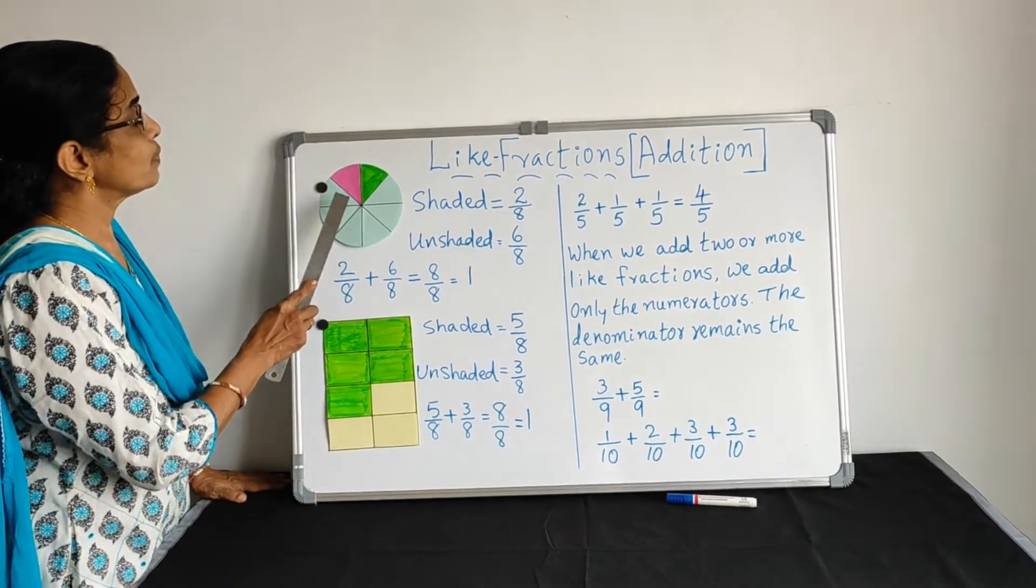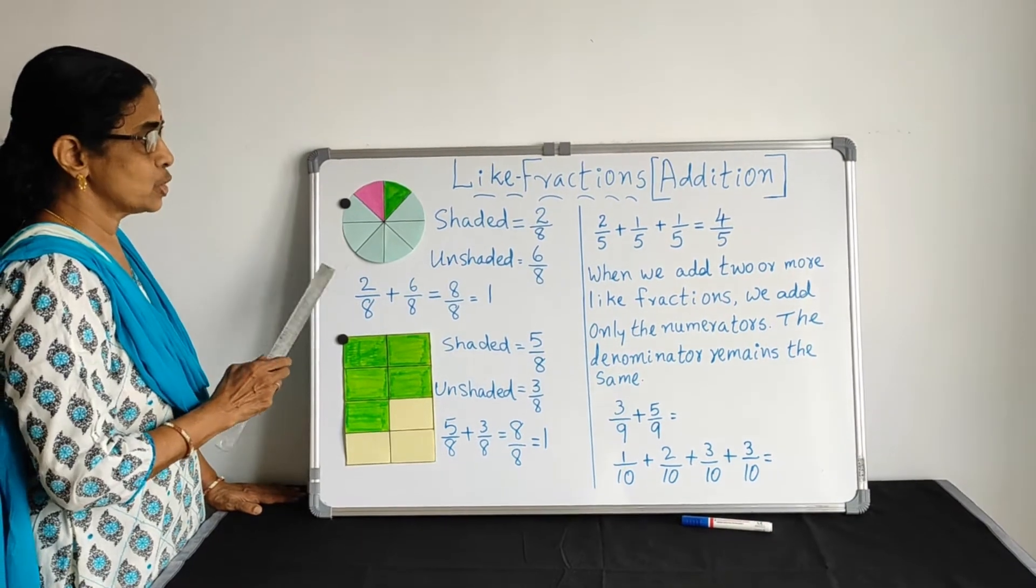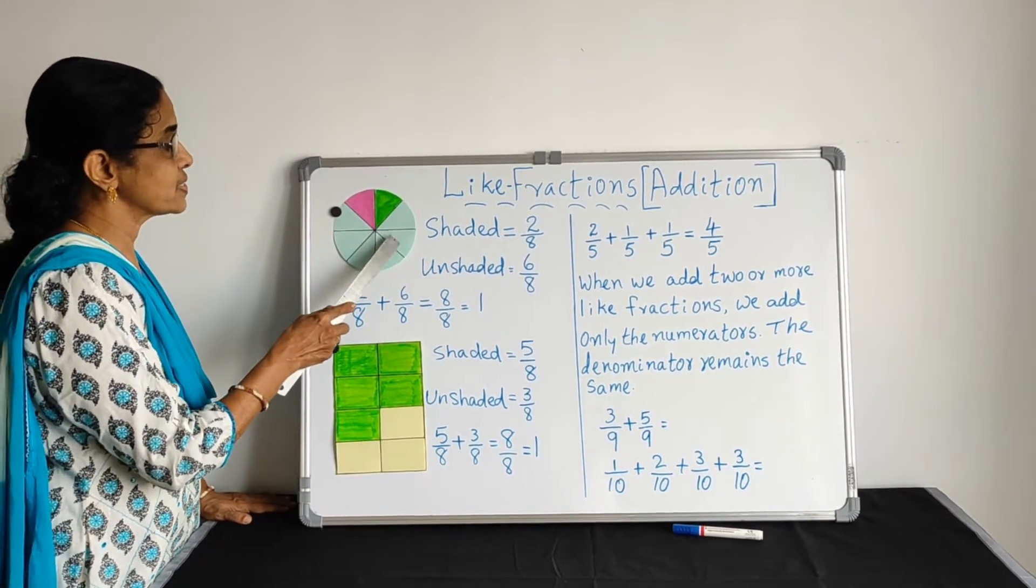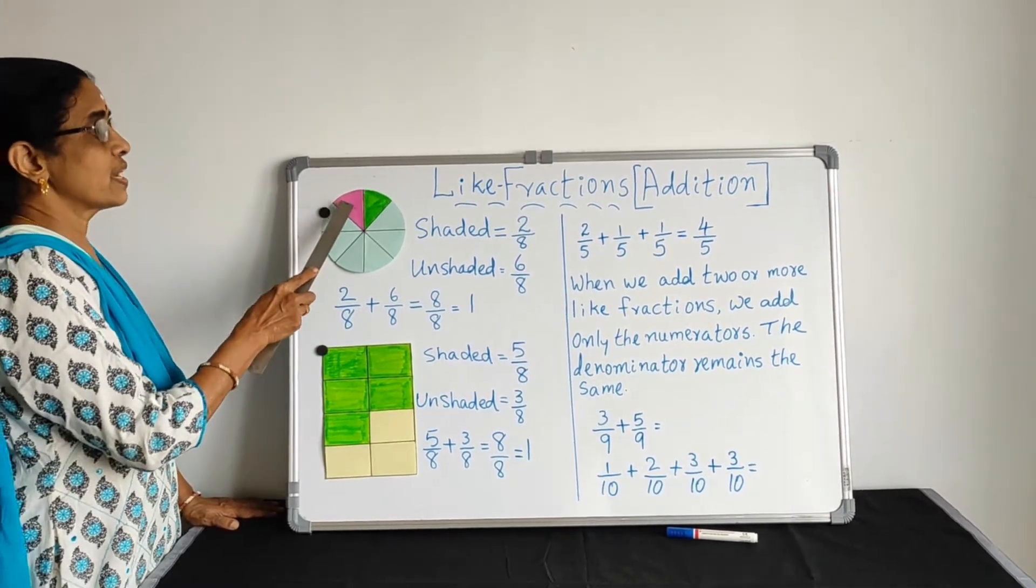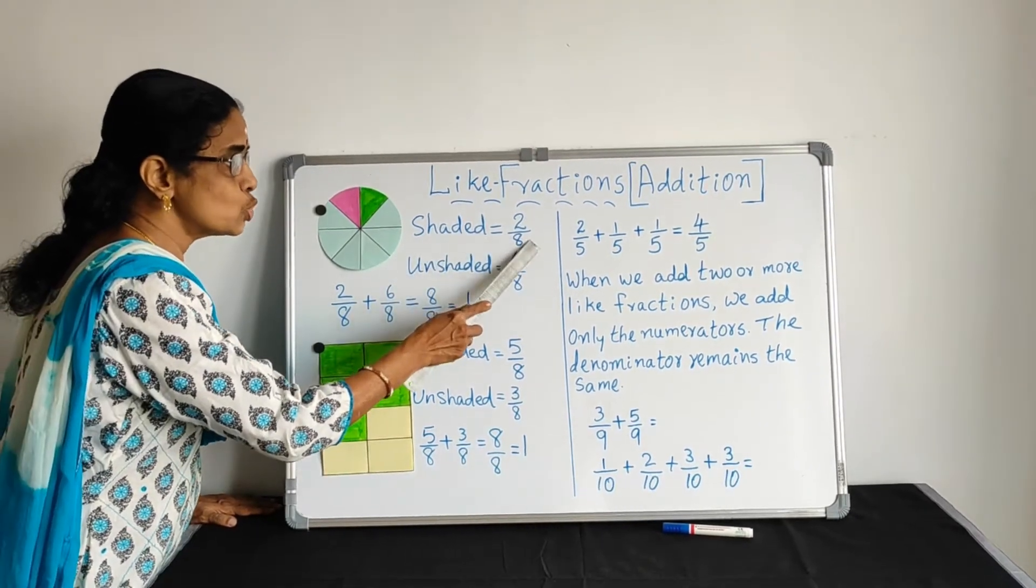Look at the fraction. Here two portions shaded. Totally 1, 2, 3, 4, 5, 6, 7, 8. Total 8 parts. Shaded 2 parts. So shaded represents 2 by 8.